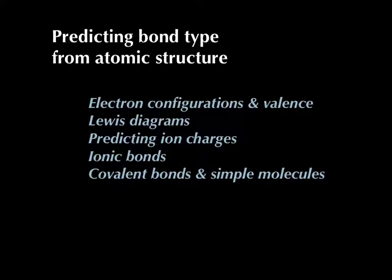Today's lesson we're going to look at how we represent bonds between different kinds of atoms. We'll cover a graphical way to represent them and the theoretical basis, starting back with electron configurations and identifying valence electrons. Then I'll teach you how to draw Lewis diagrams, use those to predict ion charges, represent ionic bonds, and then covalent bonds — including how we draw pictures of simple molecules.